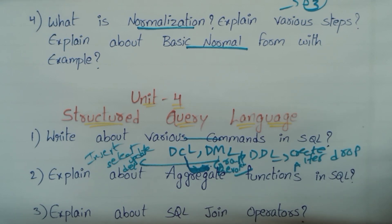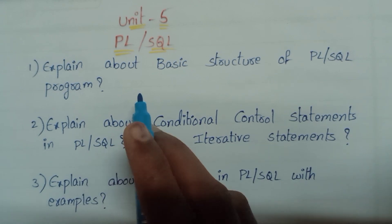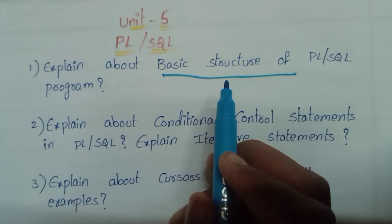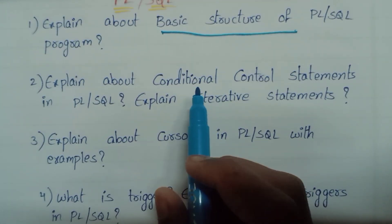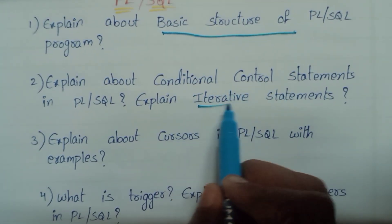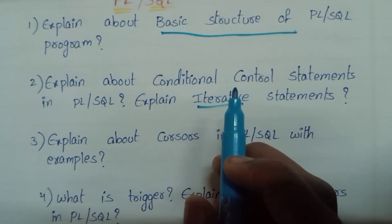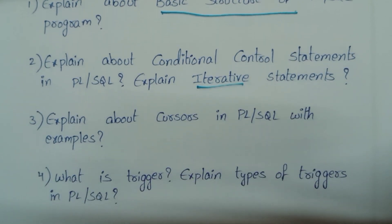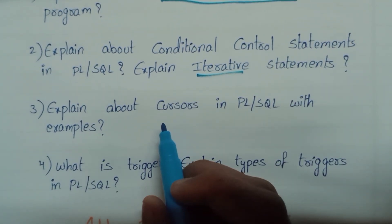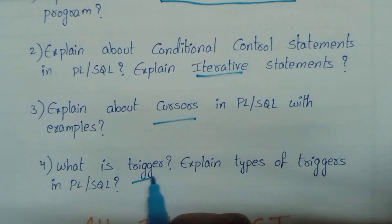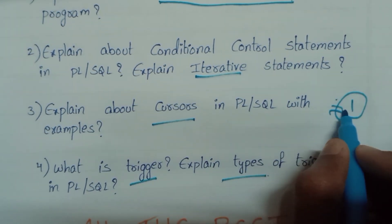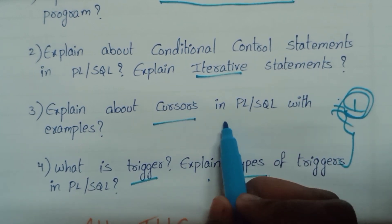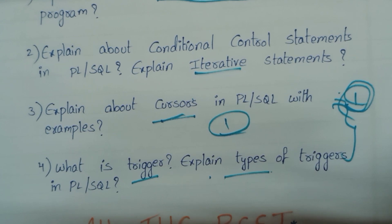Unit 5 — you need five questions on PL/SQL. First question: basic structure of a PL/SQL program. Second question: explain about conditional control statements. Next, looping control statements — very important. Cursors with examples, and Triggers with types. Two questions will be left as optional in the paper — prepare for all.